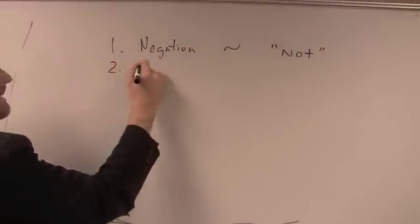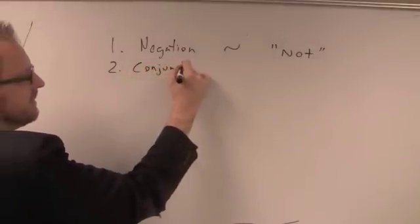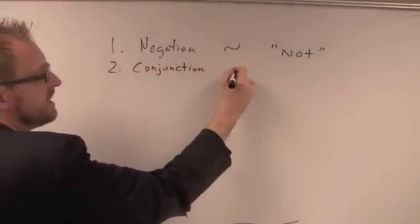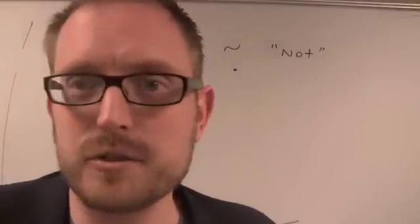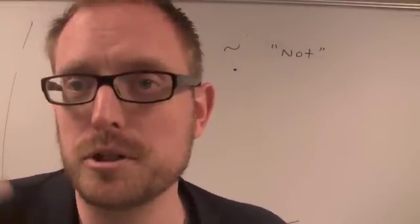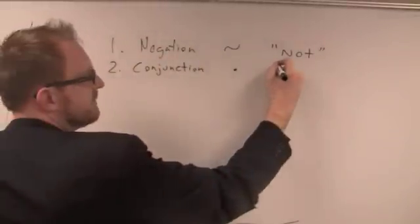The second is called conjunction, symbolized with the dot. Since we're doing it online, not everyone's going to have the symbolism in their computer, so we're just using a period, but basically just a dot. In ordinary language, that's AND, combining statements.